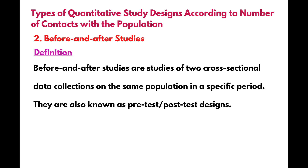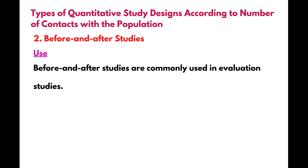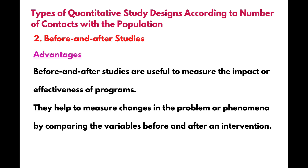Before and after studies are studies of two cross-sectional data collections on the same population in a specific period. They are also known as pre-test post-test designs. Before and after studies are commonly used in evaluation studies. They are useful to measure the impact or effectiveness of programs and help measure changes in the problem or phenomena by comparing variables before and after an intervention.